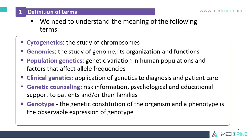We need to understand some of the terms used in genetics. Cytogenetics is the study of chromosomes. Genomics is the study of the genome, its organization, and functions. Population genetics concerns genetic variation in human populations and factors which affect allele frequencies. Clinical genetics is the application of genetics to the diagnosis and treatment of genetic diseases.